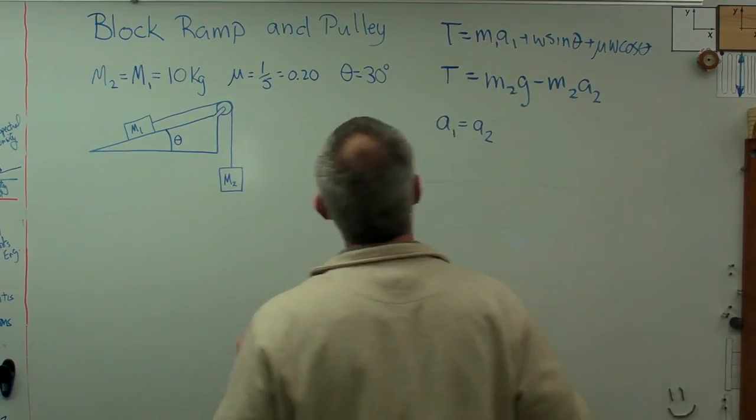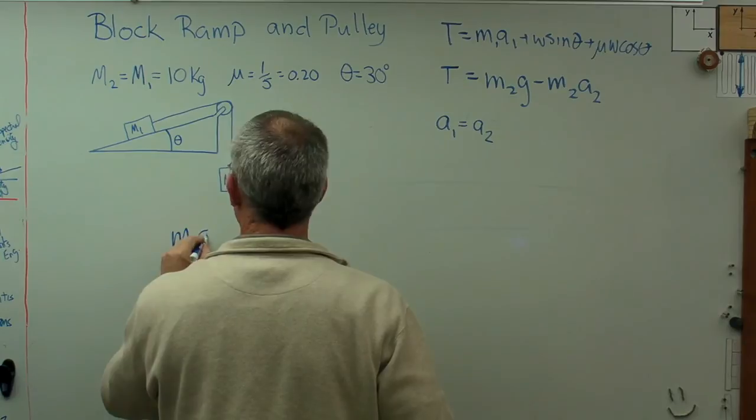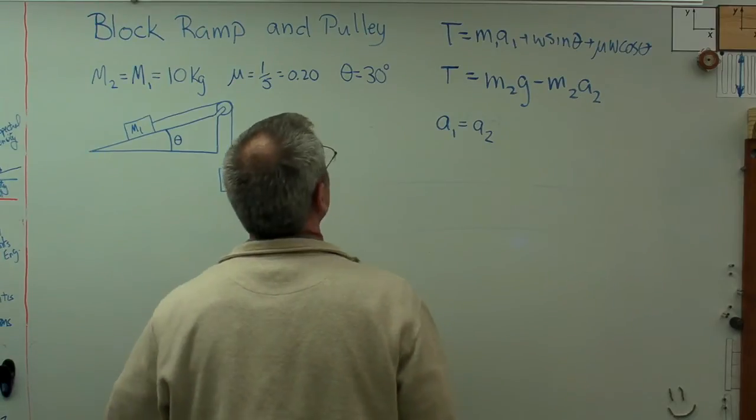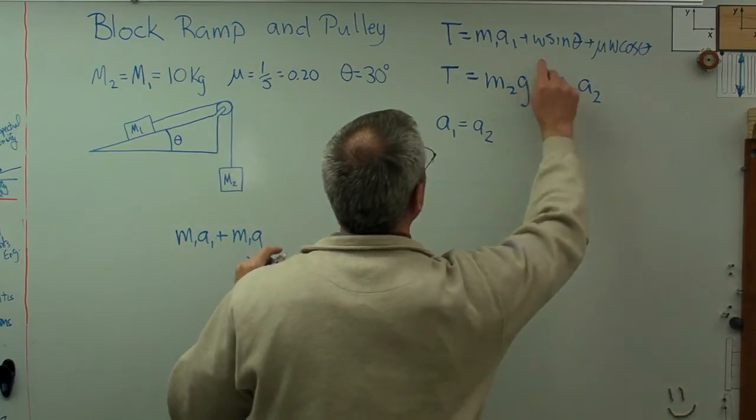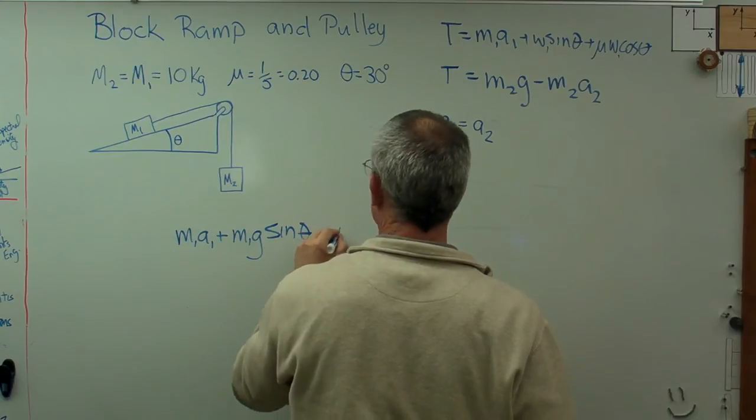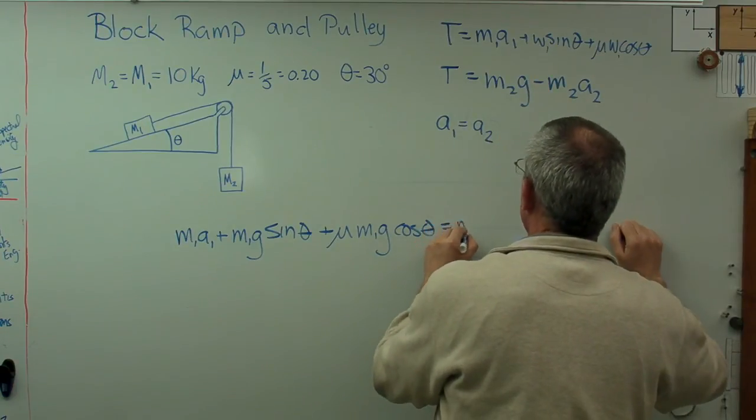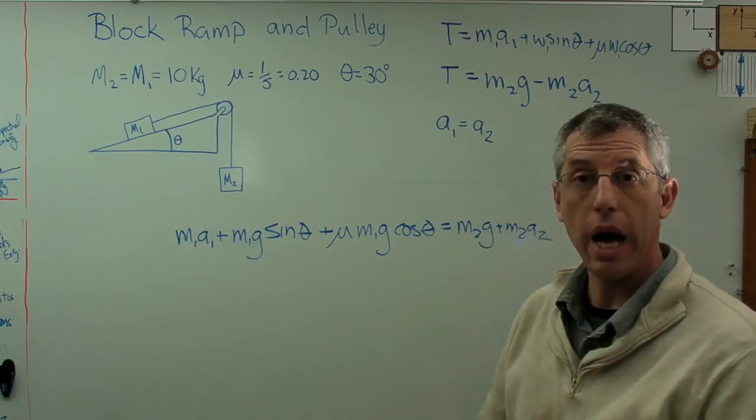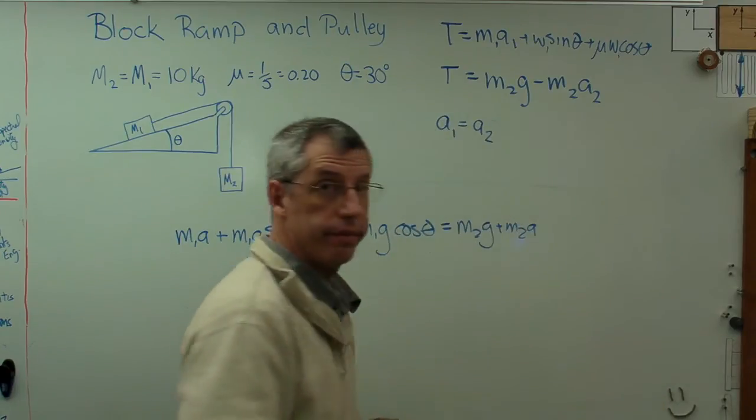The first thing I'm going to do is write out these two expressions, and since they're both equal to T, they're both equal to each other. m1 a1 plus m1 g sine theta plus mu m1 g cosine theta equals m2 g minus m2 a2. There's the first expression and the second one. I know the two accelerations are equal to one another, so I can just erase the subscripts. I know those are equal to each other.